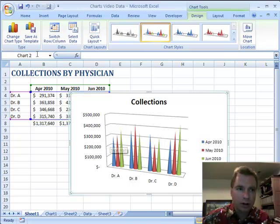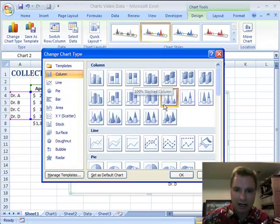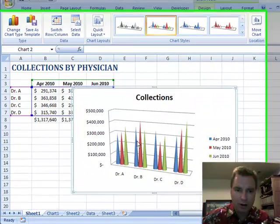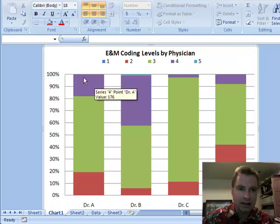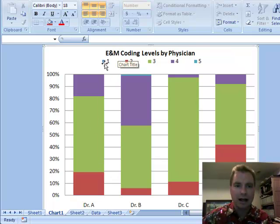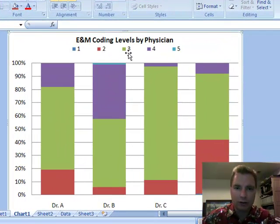I want to show you how this 100% stacked column works and what that does. I've got a chart set up here and what this is, the 100% stacked means that I'm going to take all of these four physicians and I'm going to look at their E&M codes, level 1, level 2, level 3, level 4 and level 5.